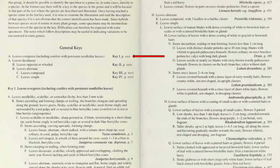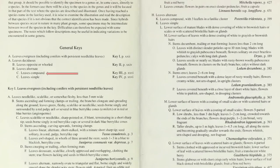Key one is for species with evergreen leaves, including conifers with persistent needle-like leaves. Keys two, three, and four are for species with deciduous leaves. Key two is for species with opposite or whorled leaves. Key three is for alternate compound leaves, and key four is for alternate simple leaves.